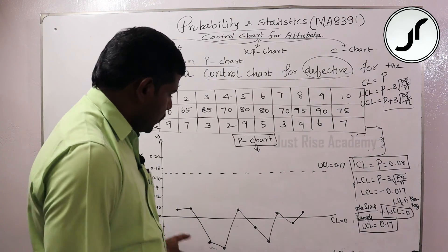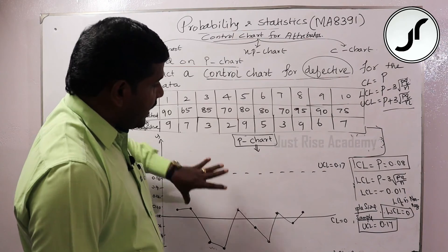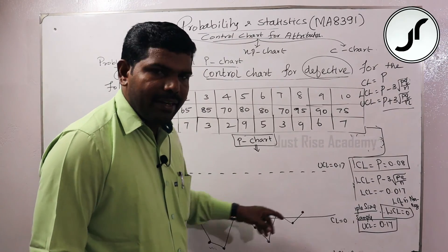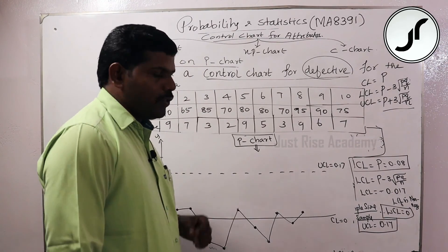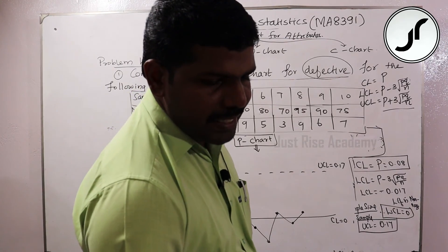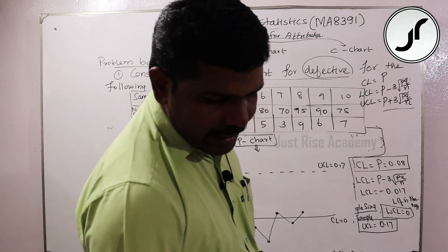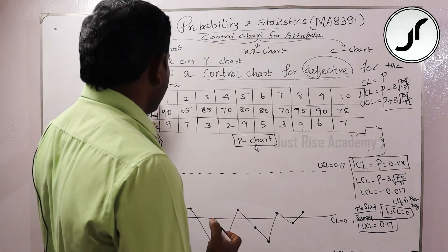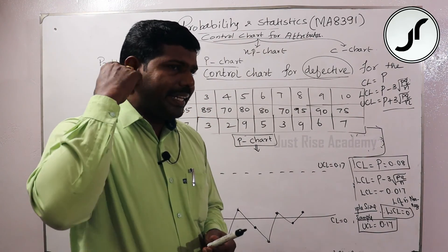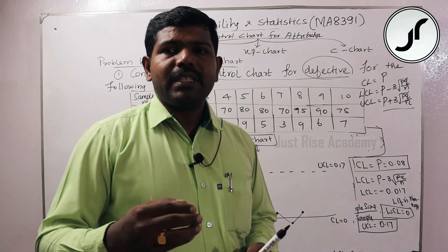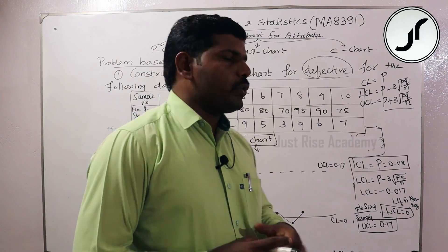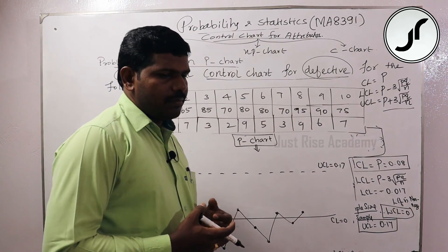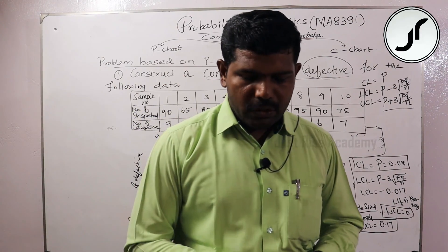We can now conclude that all the proportion values of defectives are within the control limits — between the upper control limit and lower control limit. Therefore the statistical process is under control. The manufacturing and inspection of defectives is under statistical control, and the process is successfully controlled. We will continue with more problems next.